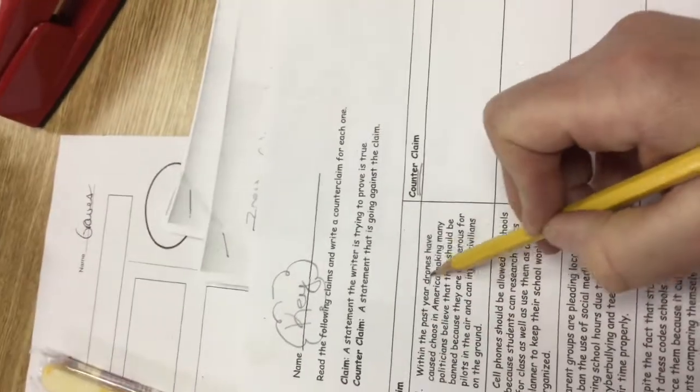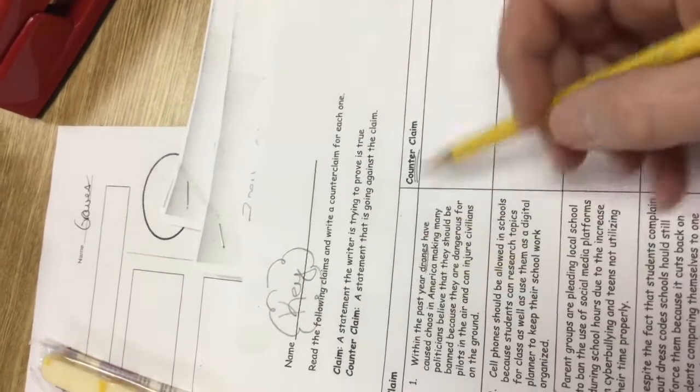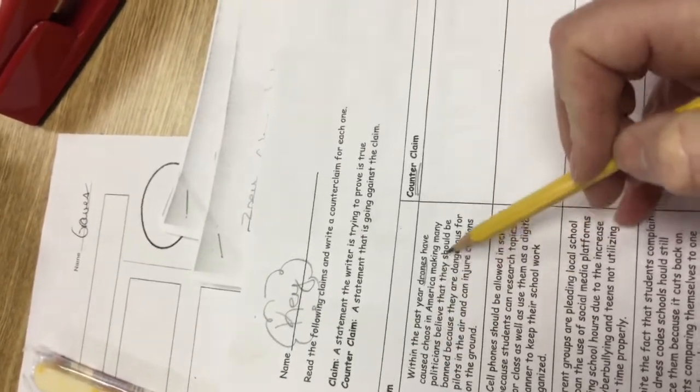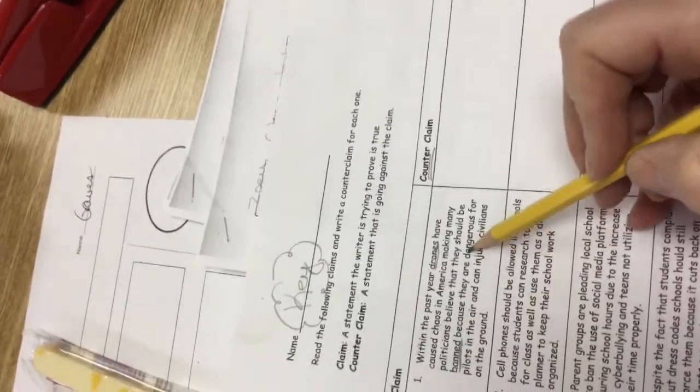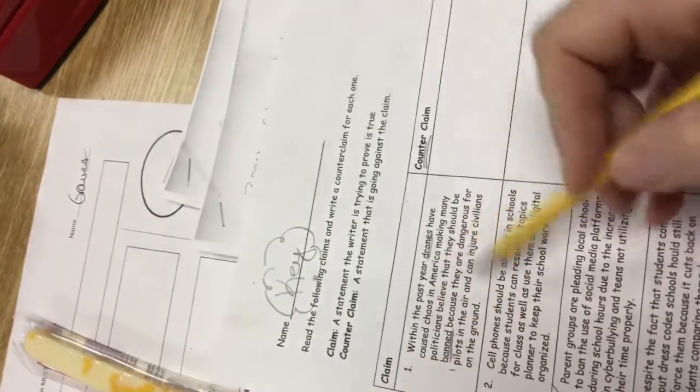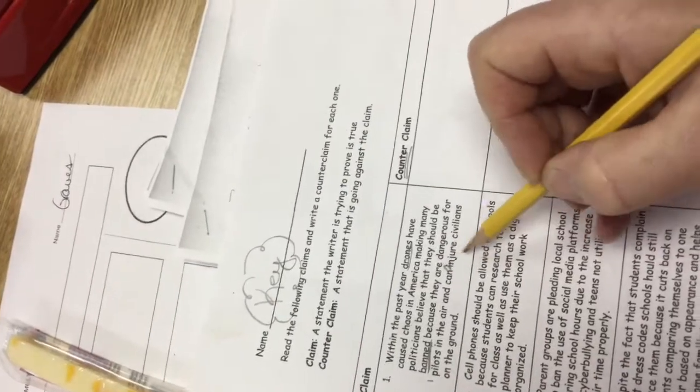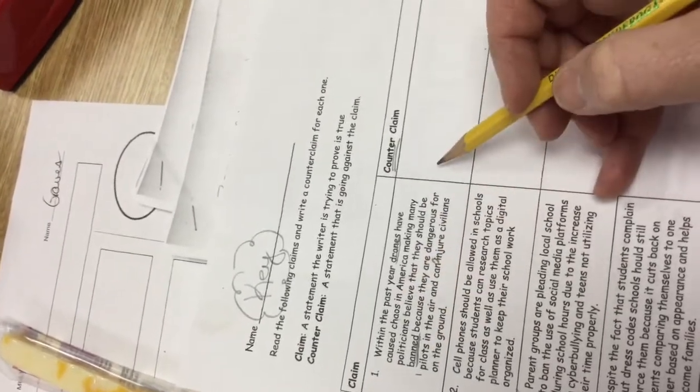It says within the past year, drones - you know those little flying machines that people operate with a remote control - have caused chaos in America, making many politicians believe that they should be banned. So they're talking about getting rid of drones because they are dangerous for pilots in the air and can injure civilians on the ground. In this counterclaim we're going to argue we shouldn't ban drones, but we have to address these two concerns.